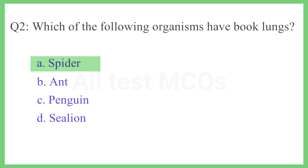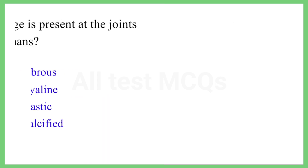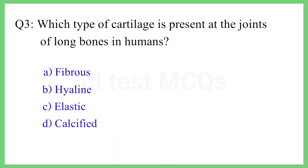Question No. 3. Which type of cartilage is present at the joints of long bones in humans? The correct answer is Option B: Hyaline.